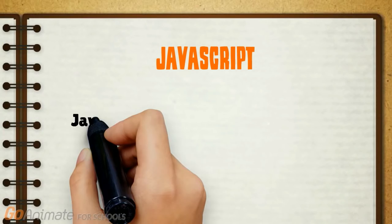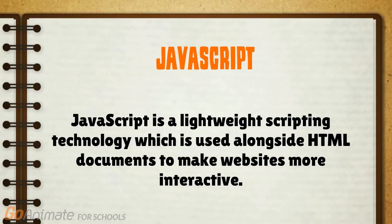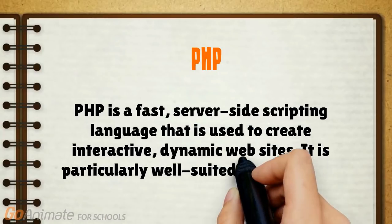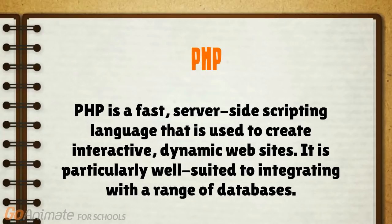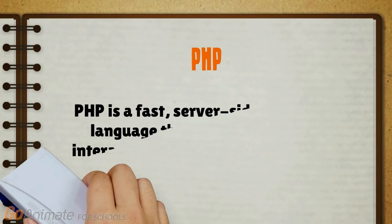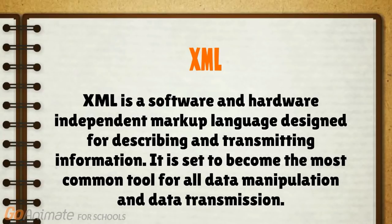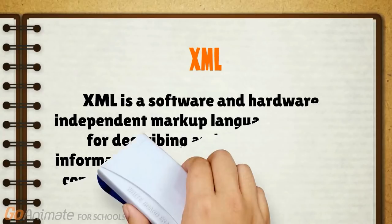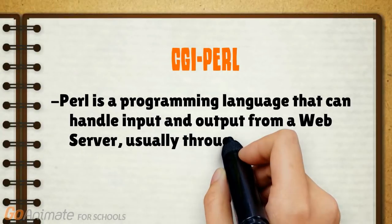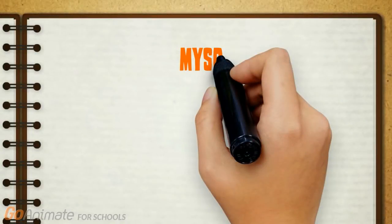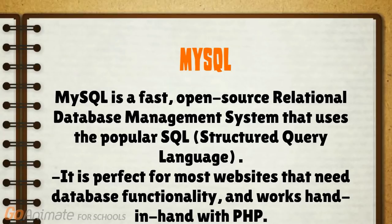JavaScript is a lightweight scripting technology used alongside HTML documents to make websites more interactive. PHP is a fast, server-side scripting language used to create interactive, dynamic websites, and is particularly well suited to integrating with a range of databases. XML is a software and hardware independent markup language designed for describing and transmitting information, and is set to become the most common tool for all data manipulation. Perl is a programming language that can handle input and output from a web server, usually through the common gateway interface (CGI), and is most commonly used for form information. MySQL is a fast, open-source relational database management system that uses SQL (structured query language), and is perfect for most websites that need a database.